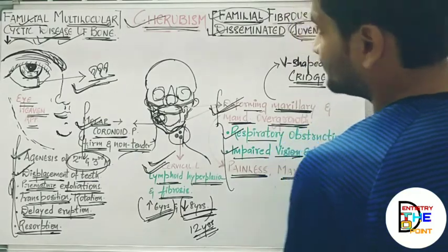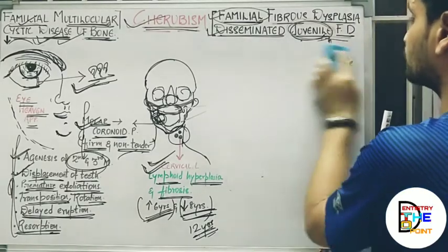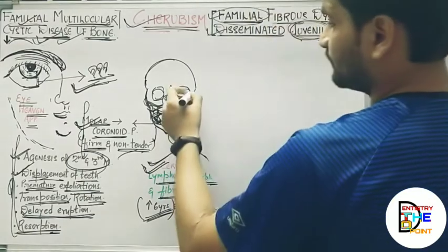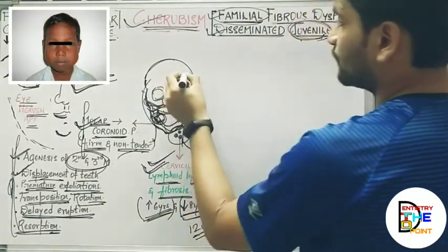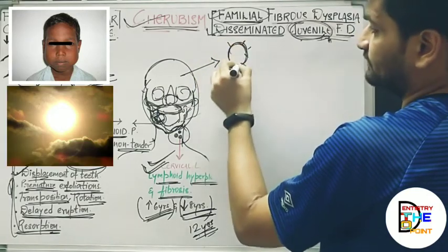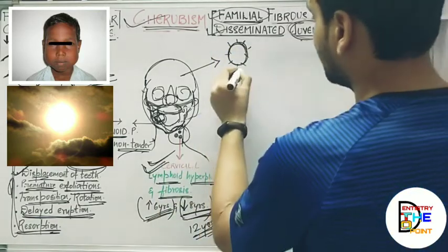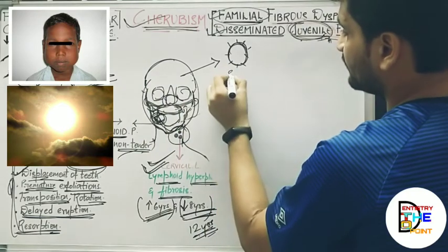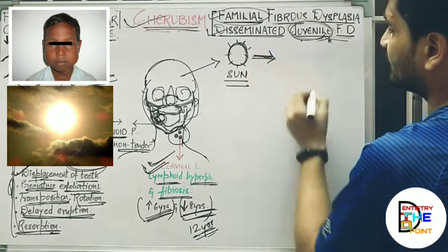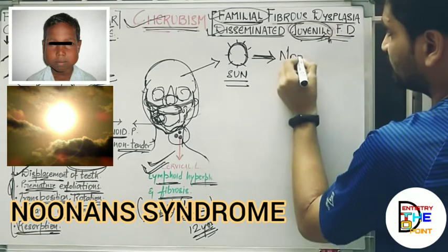Apart from this, cherubism is also associated with a systemic medical condition — a syndrome known as Noonan's syndrome. The facial appearance is going to be rounded. You can relate the round face to the sun, and from 'sun' you can recall Noonan's syndrome — a mnemonic trick: sun → noon → Noonan's syndrome.